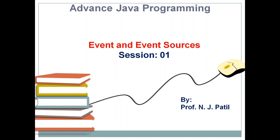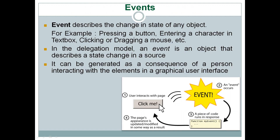An event simply describes a change in the state of any object. For example, when I press a button or enter a character in a text box, an event is generated. Clicking or dragging the mouse generates an event. Even simply moving the mouse generates an event.